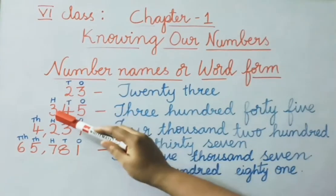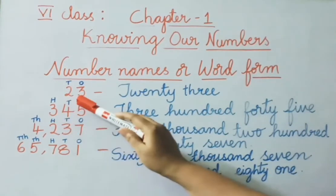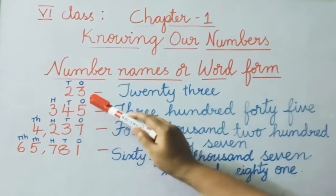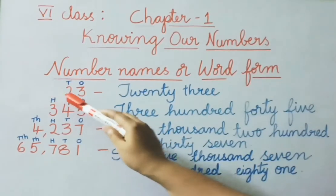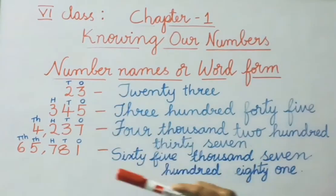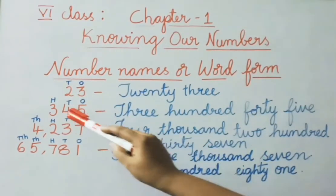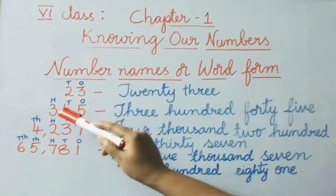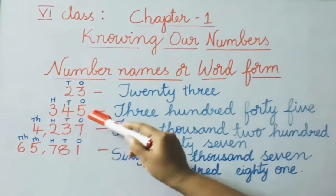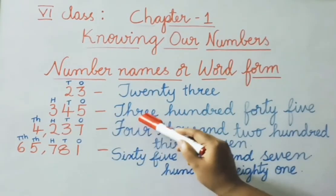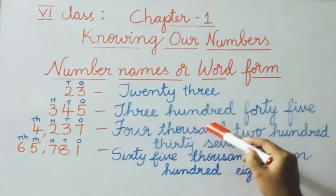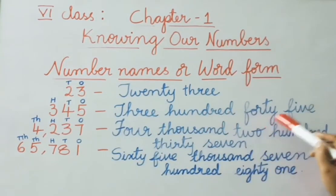Next example: 345. Hundreds place is 3, tens place is 4, and ones place is 5. So we denote the places and read the number 345. Write down the number name for 345.